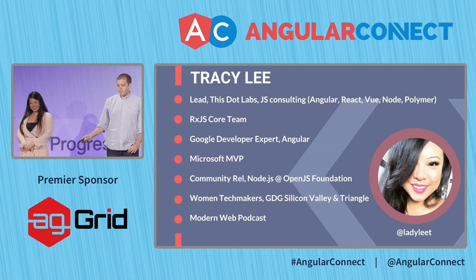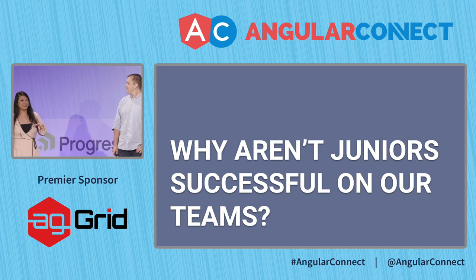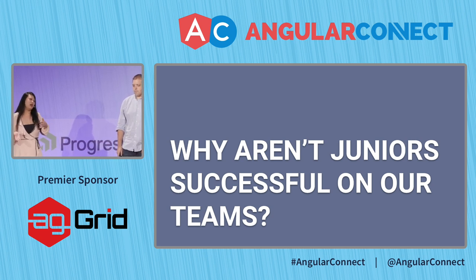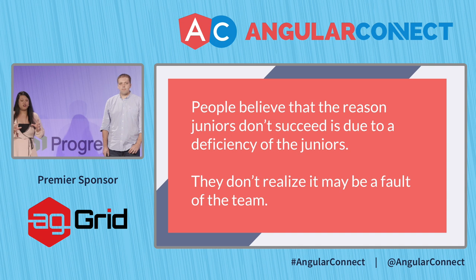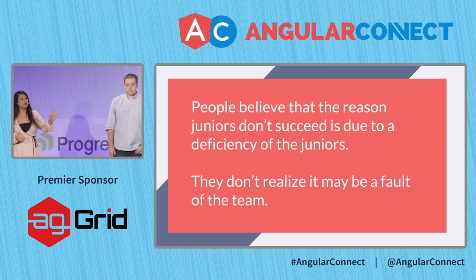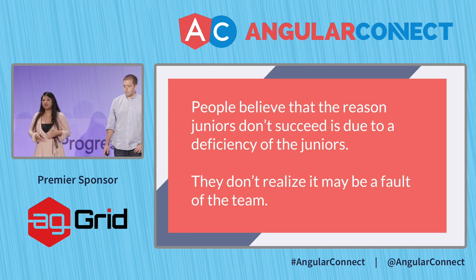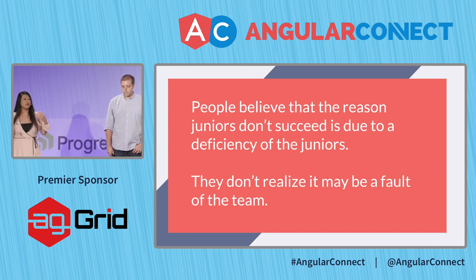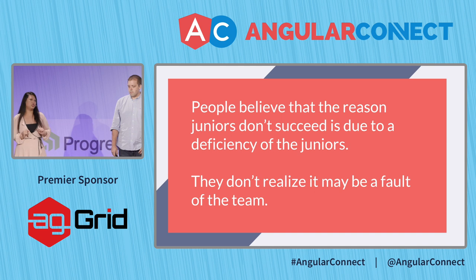So let's talk about why juniors are actually not successful on teams. A lot of times we say they're not skilled enough, but it might not actually be for their lack of knowledge. Did you ever think this might actually be the fault of the teams and how they're set up? If you're not making inclusive decisions from the get-go in your codebase and structuring your team, this might actually be the reason why juniors are failing. But these decisions actually affect everybody, not just juniors.